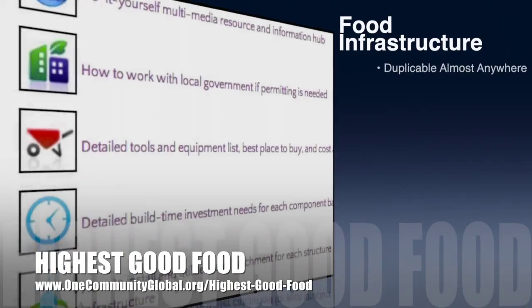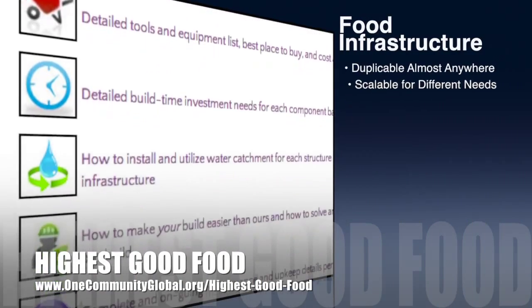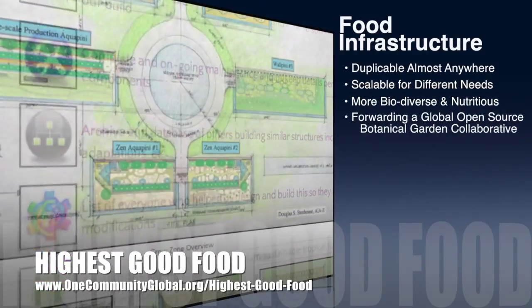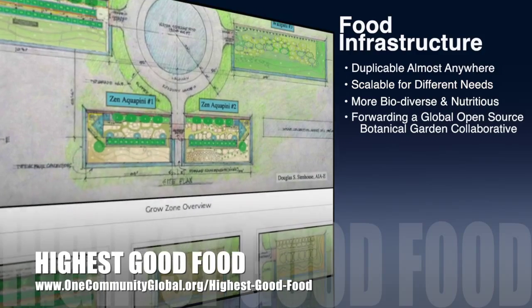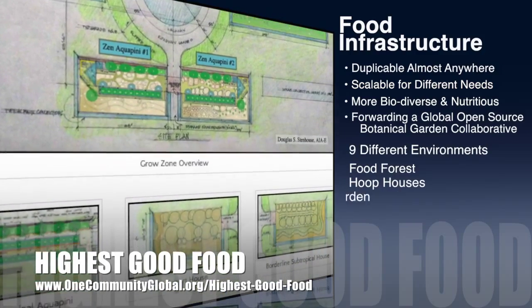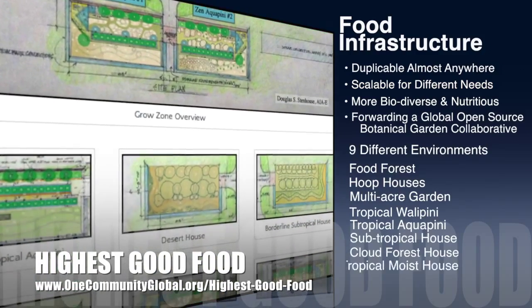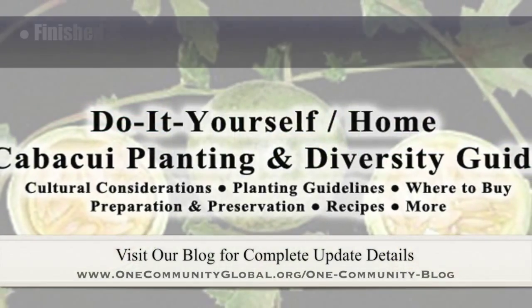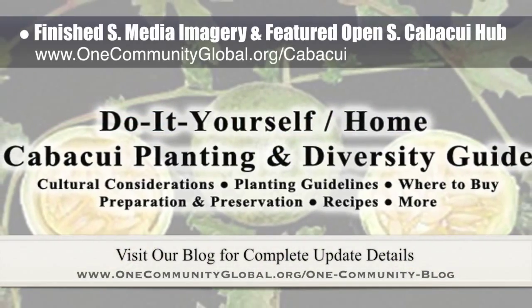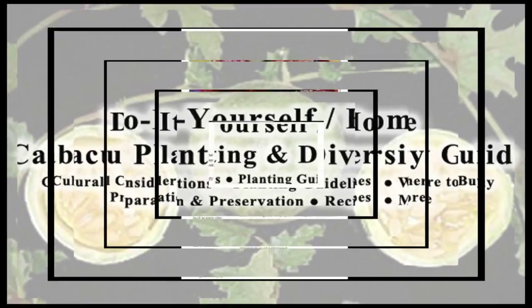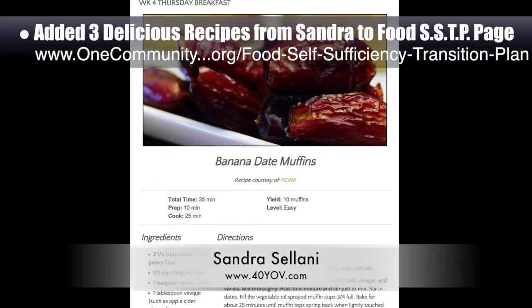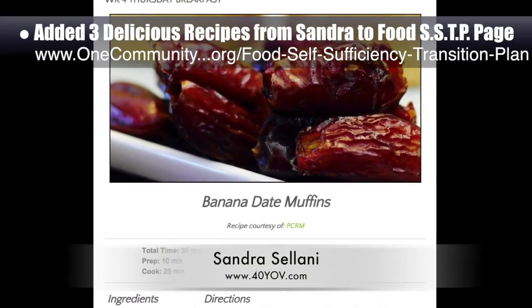One Community's approach to Highest Good Food is duplicable almost anywhere, scalable for different needs, more biodiverse and nutritious, part of forwarding a global open source botanical garden collaborative, and includes nine different free shared and duplicable growing environments. This week, the core team working on Highest Good Food finished the final social media imagery and featured our open source Kabakui Hub. We also added three additional recipes from Sandra Solani, vegan chef and author of What's Your BQ, to the Food Self-Sufficiency Transition Plan.